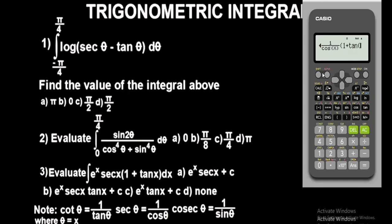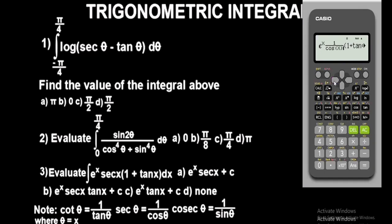Ensure the brackets are balanced. On the left we have one bracket, on the right we have one — we need to add one more on the right to balance to two. Now we are good to go. Press equals and see the output. We get 21.04. Any option that gives 21.04 when differentiated will be the answer.